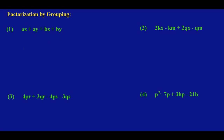Hi guys. In this video we're going to be looking at factorization by grouping. As we would have learned in previous lessons, when factorizing we're looking for a variable, a letter, or a number that is common to both terms. Now since we're factorizing by grouping, I have four terms here.